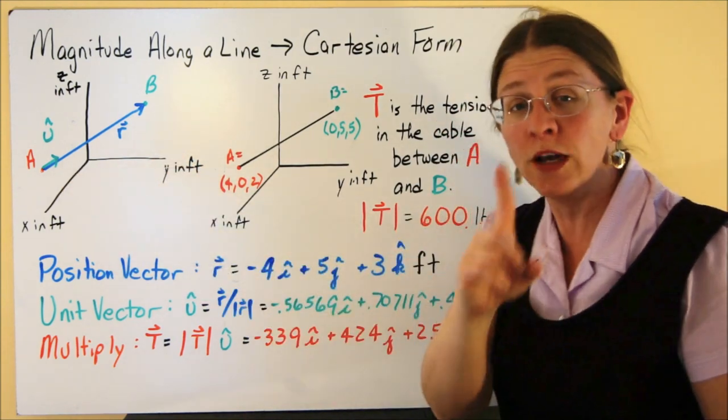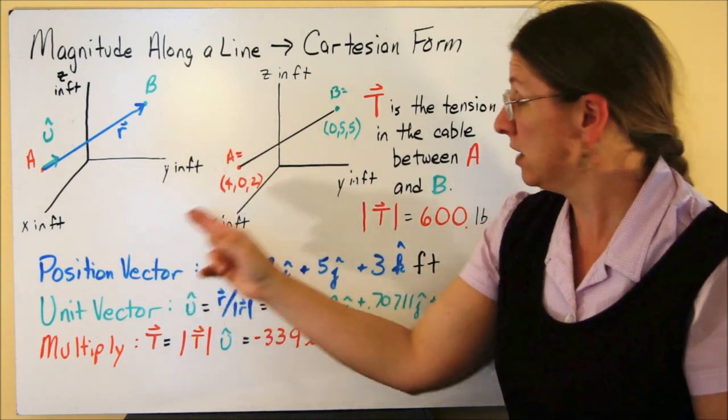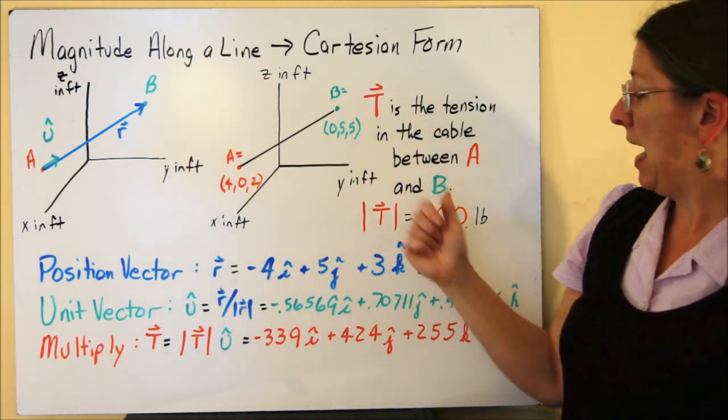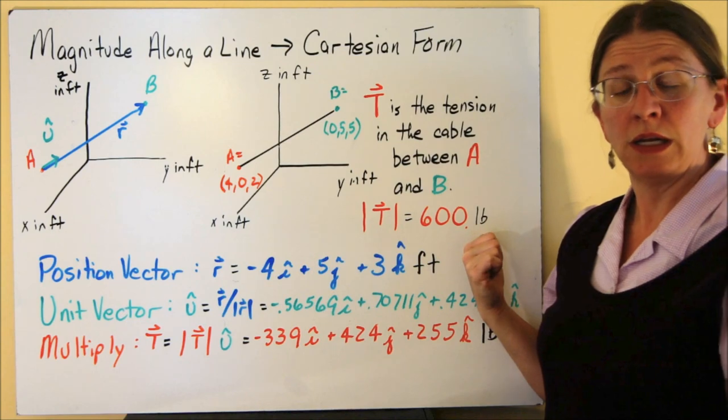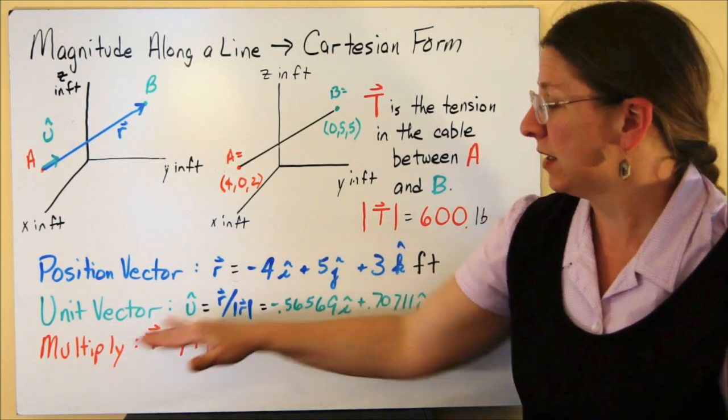My unit vector is going to go one foot or one bit along that, but it won't have any units. The tension has to have units of pounds. It starts with 600 pounds. It needs to end up in something of pounds. So position vector, unit vector, multiply.